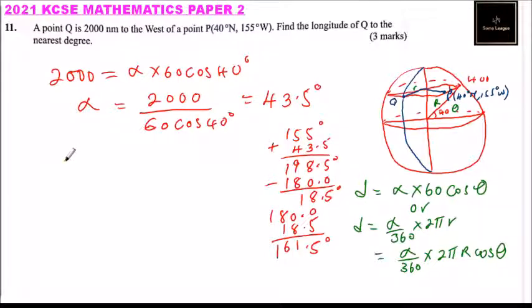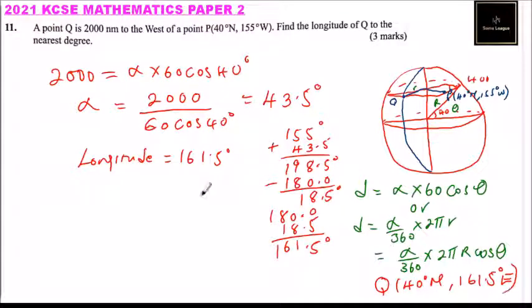So this means that the longitude of Q, that is longitude, is equals to 161.5. Actually, we can say the position of Q is, it is 40 degrees to the north, and it is 161.5 degrees to the east. So that is a position, although that is not that, if you answer that, just say the longitude is 161.5 degrees, you get 3 marks. So that's how you approach that question, and you'll be able to get the correct answer.